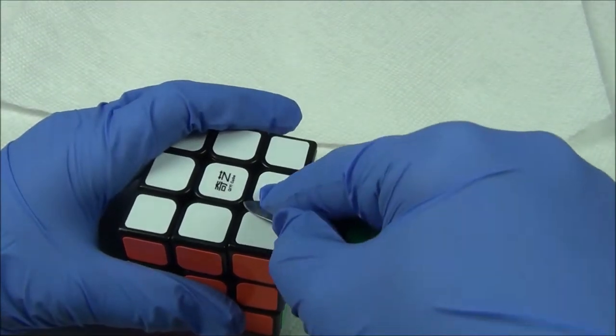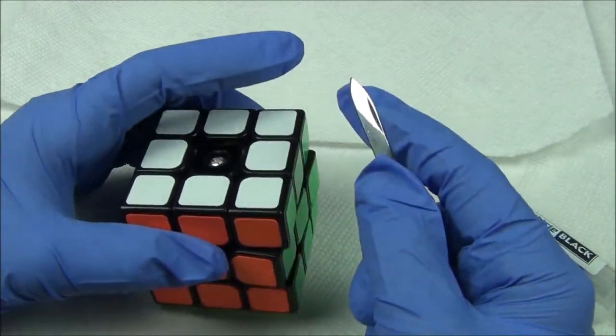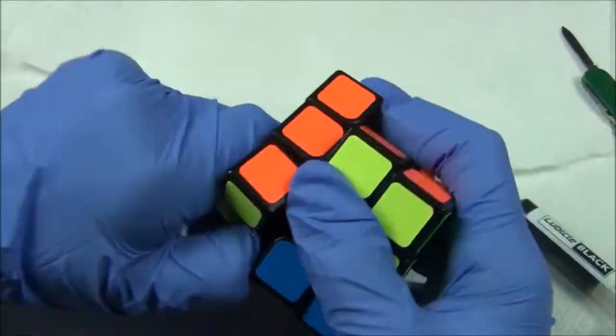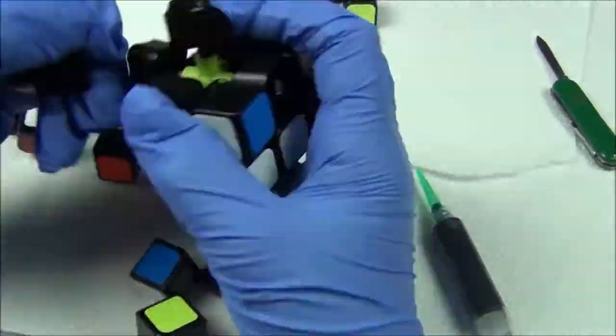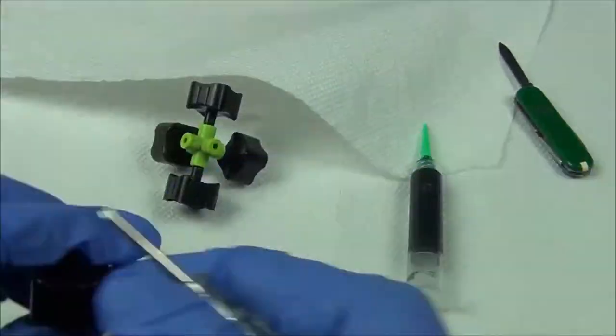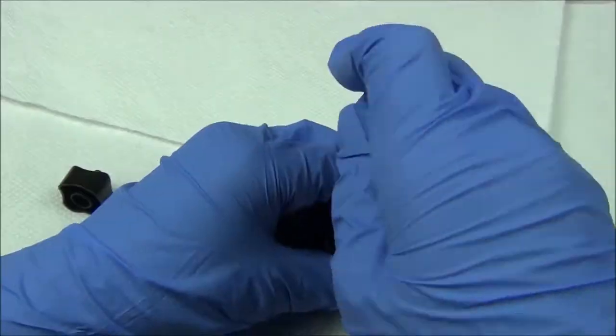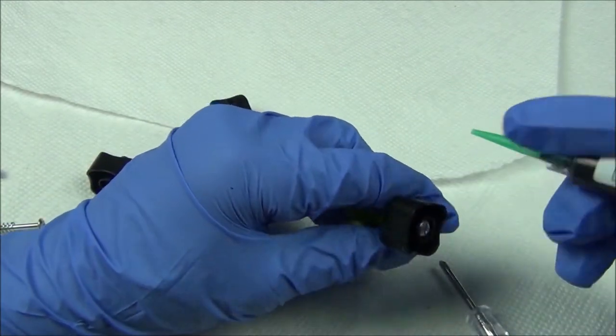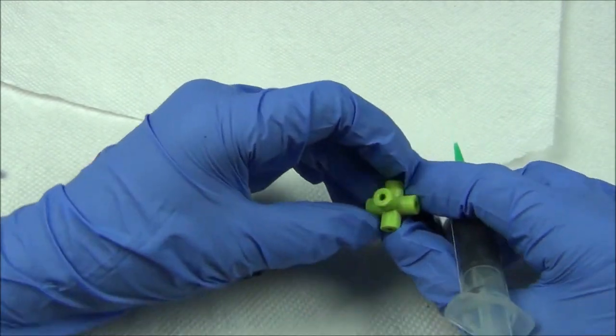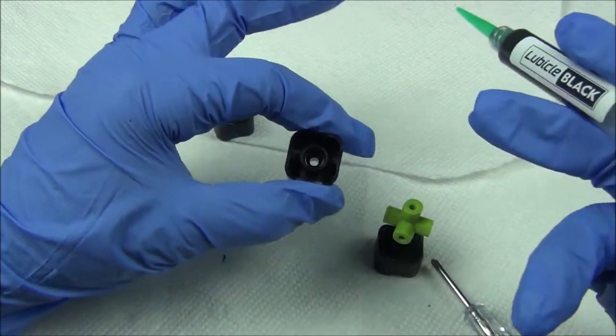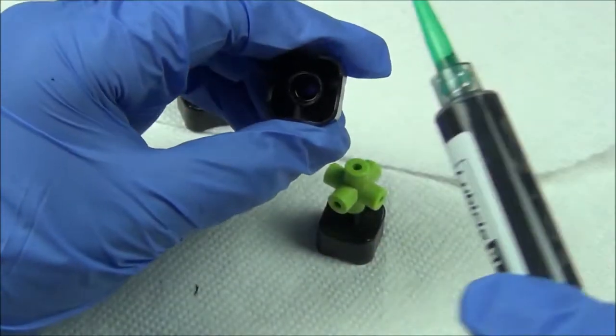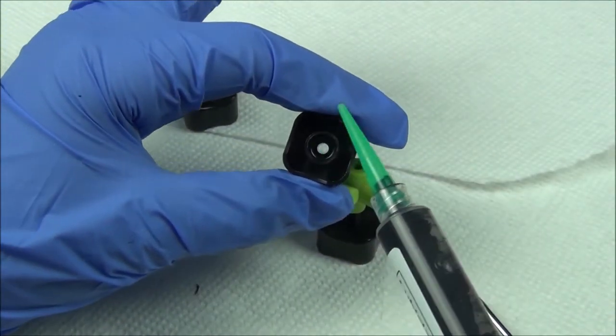So the first part of lubing a core is to disassemble the puzzle. So as mentioned before we had a couple key points. We have one under the stock right here and one under the screw where we're going to lube. So I find it easier to lube a core when the core is disassembled.